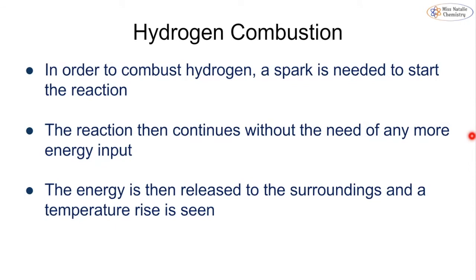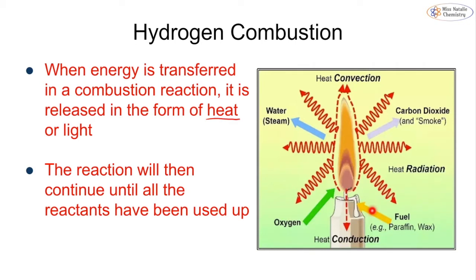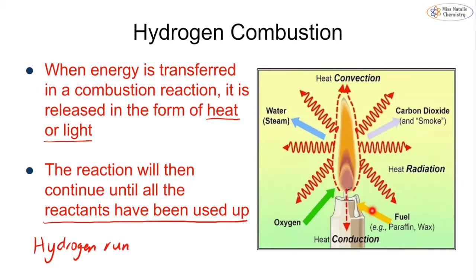To burn hydrogen we give it a spark like a lighter, and we must do this in the presence of oxygen. Once the hydrogen catches fire it will continue to burn without any more energy input, and the energy is released to the surroundings as heat and light — we see the temperature going up. The energy is released from combustion in the form of heat or light and it will continue until all the reactants are used up. When the hydrogen runs out, the burning stops.